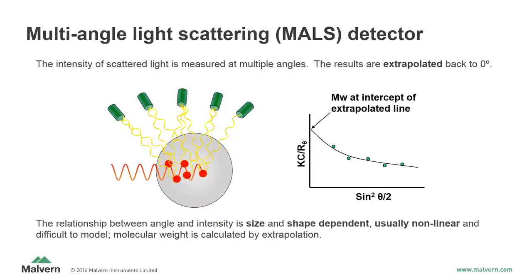Another method of determining molecular weight from light scattering measurements involves the use of a multi-angle light scattering detector. Not all molecules are isotropic scatterers, so the intensity of scattered light is not always the same at every observation angle. The low-angle light scattering detector obtains accurate molecular weight by observing the light scattered as closely to the zero angle as possible. An alternate method is to observe the light scattered at numerous angles — hence the name multi-angle light scattering — and then use the partial Zimm plot to extrapolate back to the zero angle to determine molecular weight.